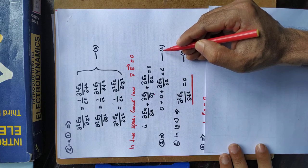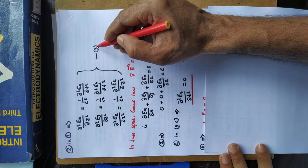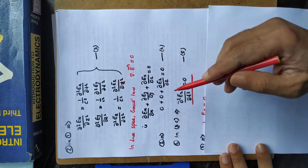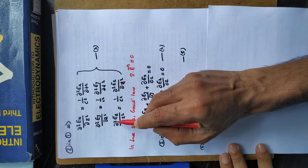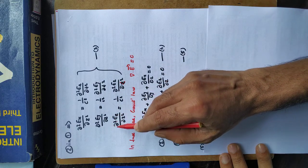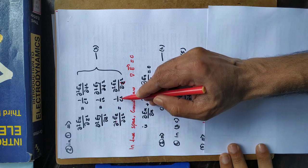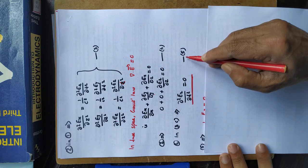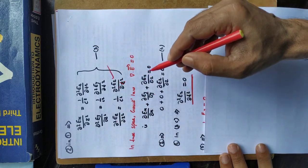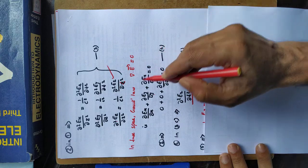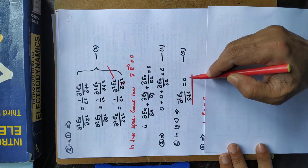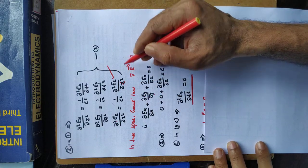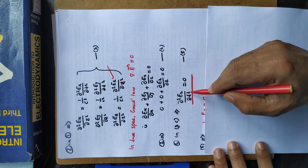Substituting equation four into equation three for the z component: since ∂Ez/∂z = 0, the first derivative is zero and so the second derivative is also zero. The left-hand side is zero, so the right-hand side must also be zero: ∂²Ez/∂t² = 0. This restriction comes from Gauss's law — the first Maxwell's equation.